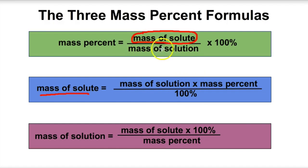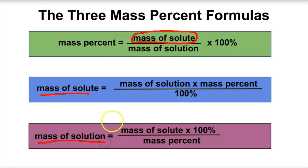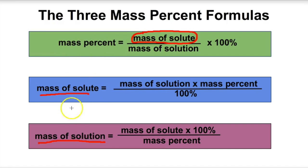What if you need the mass of the solution? Rearranging gives: mass of solution equals mass of solute times 100%, divided by mass percent. So the mass percent formula can be broken into three versions to solve for mass percent, mass of solute, or mass of solution. Let's apply these three formulas to three different example problems.